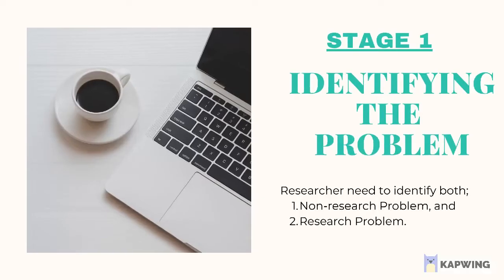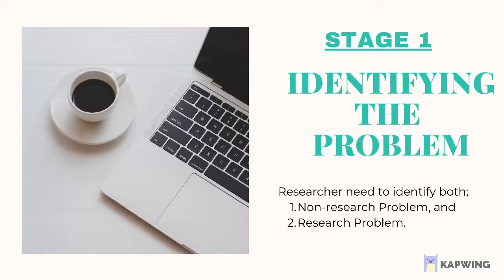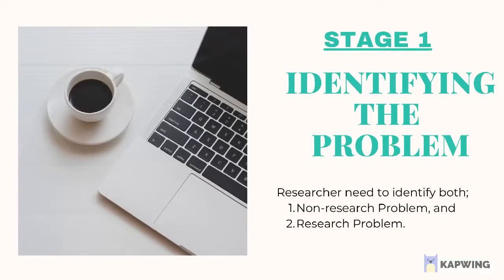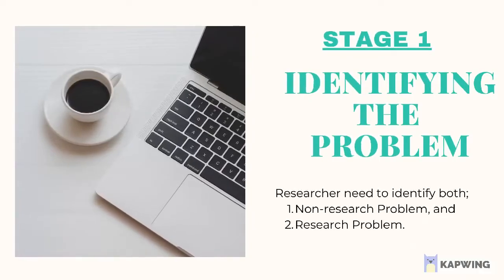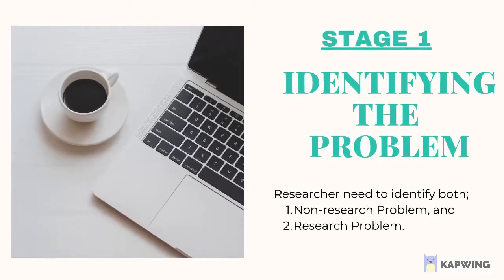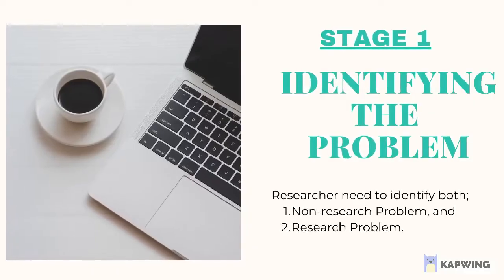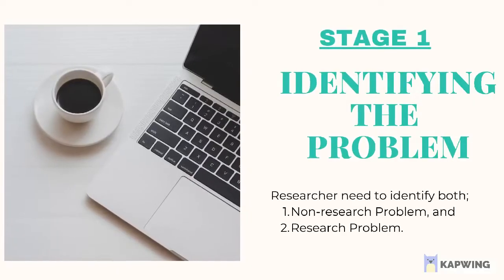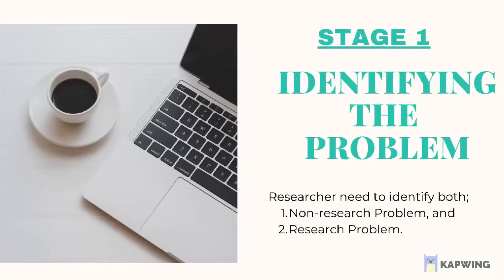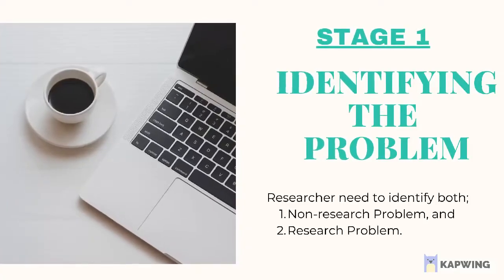Step 1: Identifying the problem. The first and foremost task in the entire process of scientific research is to identify a research problem. A well-identified problem will lead the researcher to accomplish all important phases of the research process, starting from setting objectives to the selection of the research methodology.